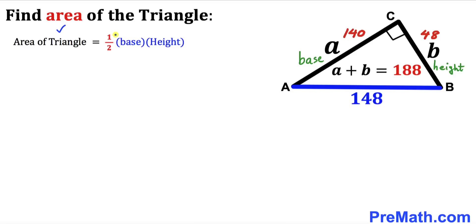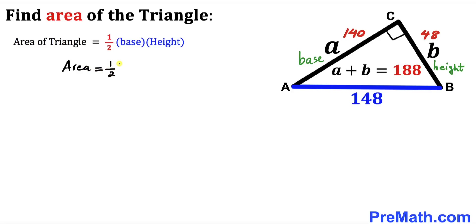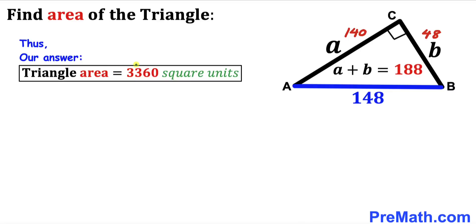Now for the final step: calculating the area of triangle ABC. Using the formula area equals one half times base times height, where our base is 140 and our height is 48, the area equals one half times 140 times 48, which simplifies to 3,360 square units. So the area of triangle ABC is 3,360 square units.